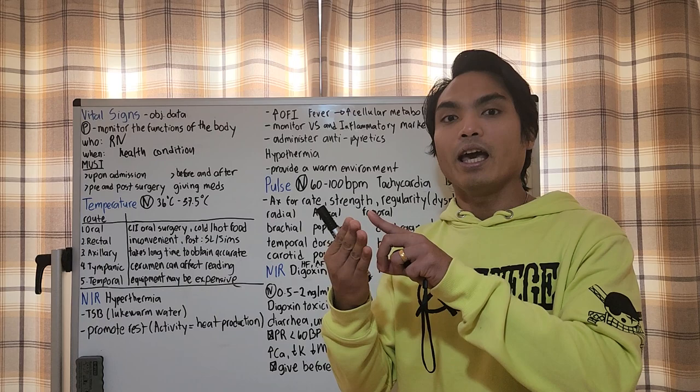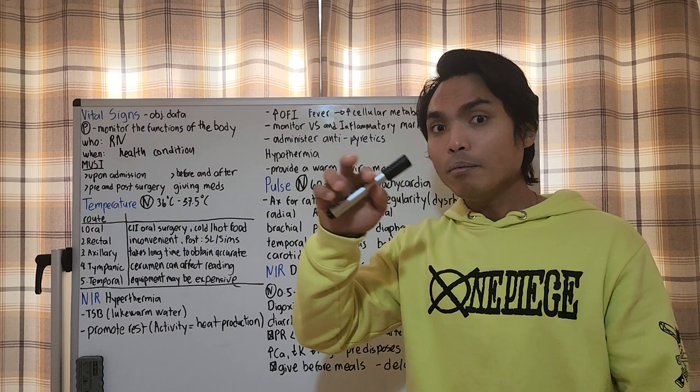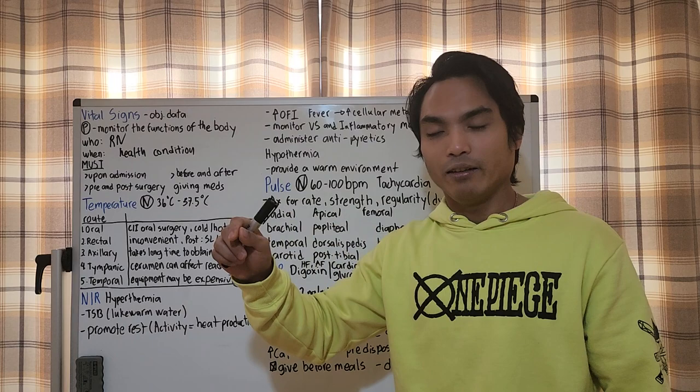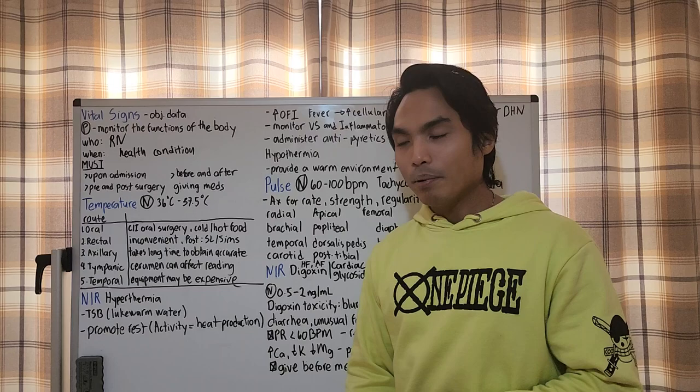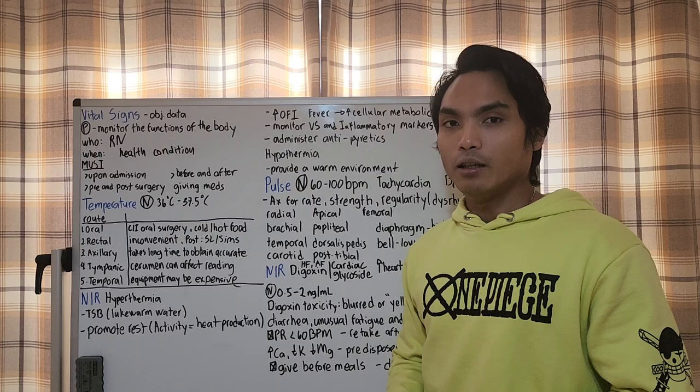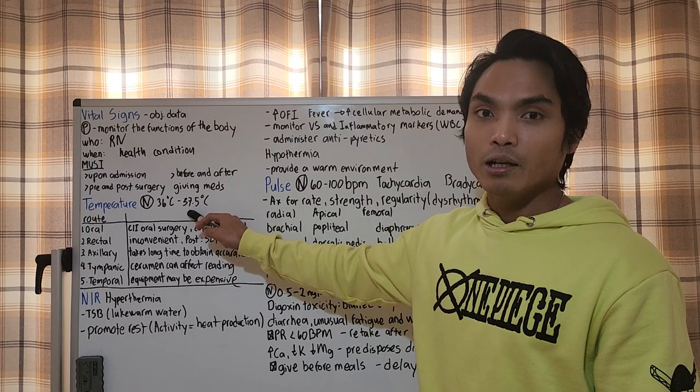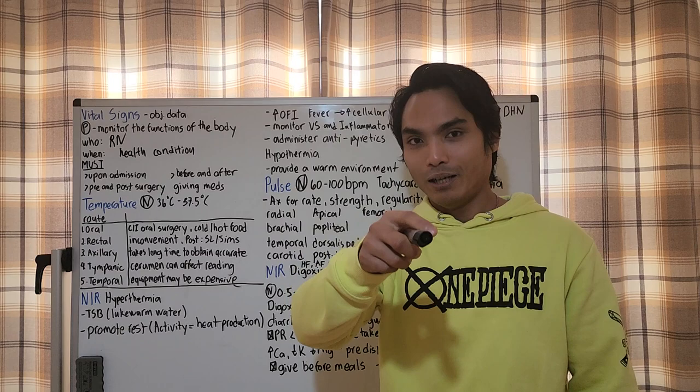There are four vital signs: temperature, pulse rate, blood pressure, and respiration. I included oxygen saturation as well, and some institutions recognize pain as your fifth vital sign. The normal temperature is 36 to 37.5 degrees Celsius. If temperature is up more than 37.5, that is hyperthermia or pyrexia or fever. Below 36 degrees is hypothermia.